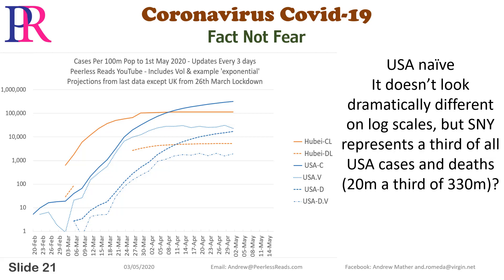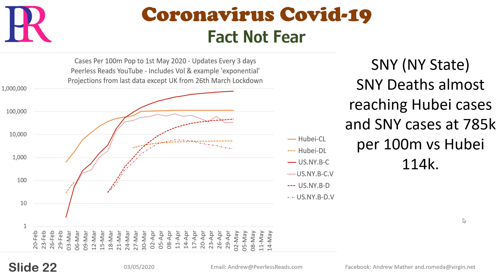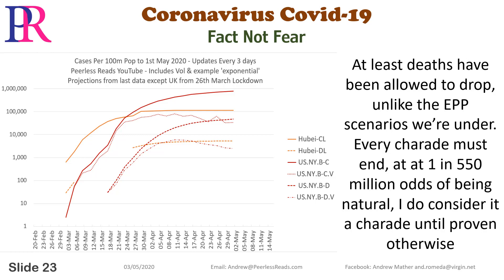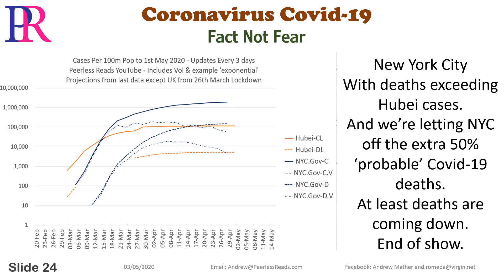20 million — a third of 330 million. New York State: deaths almost reaching Hubei cases, and cases at 750k per 100 million versus Hubei's 114k. At least deaths have been allowed to drop, unlike the EPP scenarios we're under. Every charade must end, and at one in 550 million odds of being natural, I do consider it a charade until proven otherwise. New York City, with deaths exceeding Hubei cases — and we're letting NYC off the extra 50% probable COVID-19 deaths. At least deaths are coming down now.